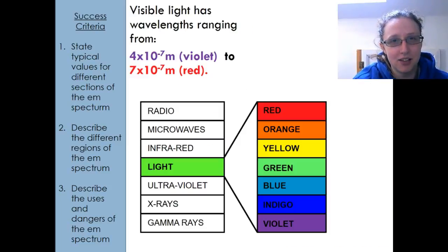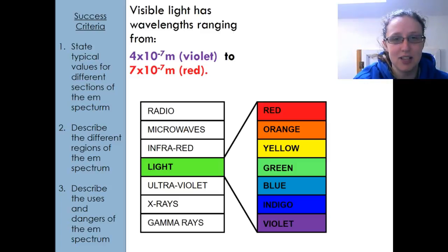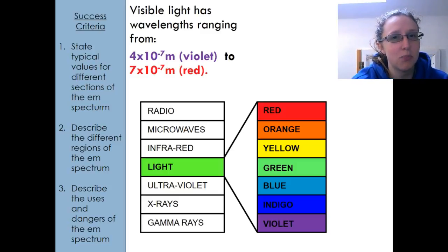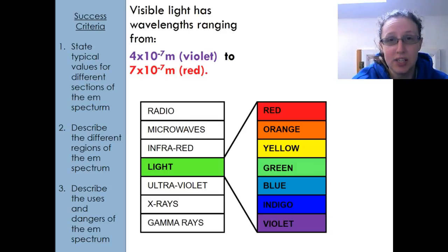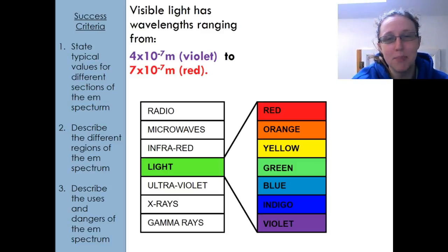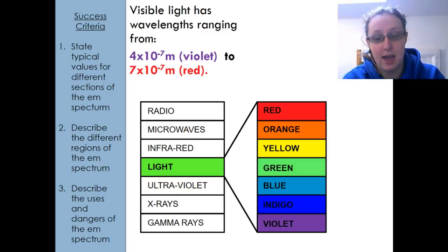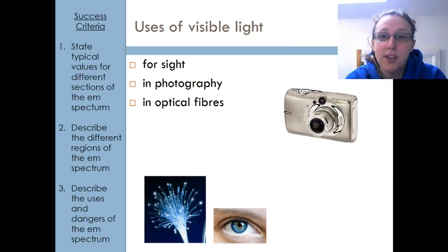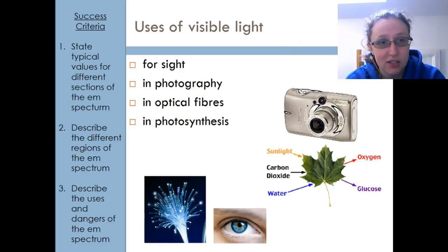Next up, visible light. Here are some numbers you must know: 4 times 10 to the 7 meters is violet, and 7 times 10 to the 7 meters is red. You may often come across these as 400 nanometers and 700 nanometers — that's how we tend to talk about the wavelength of visible light. You need to know which end is which, as you could be asked to suggest the color of light given its wavelength, from red to blue. Uses include seeing, photography, optical fibers, and photosynthesis.